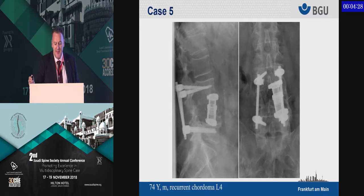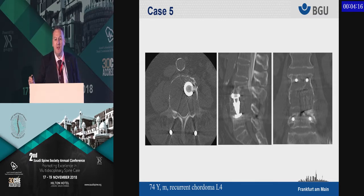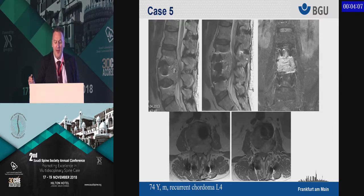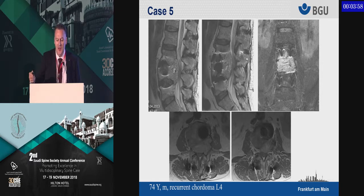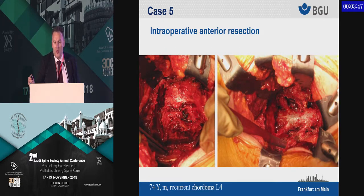The final case is a complex recurrent chordoma. The patient has already been previously operated with some fusion in between. On closer inspection of the CT scan there is still some bone tumor, and a large void which is obviously the tumor. The MRI scan shows a big recurrence of the chordoma. With implants in place, you cannot do radiation — you have to perform additional surgery. The first part is from the back, where you remove everything.